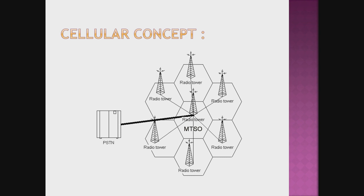Here you can observe how the cellular concept is implemented. The geographical area is divided into small hexagonal cells. Each cell has its own radio tower, called a base station, and all these base stations are connected to MTSO. MTSO is the Mobile Telephone Switching Office. This MTSO is connected to the Landline Telephone Network, that is the PSTN — Public Switching Telephone Network.